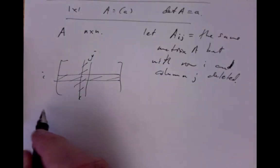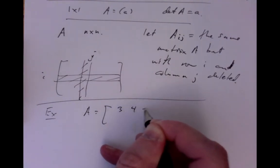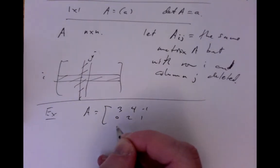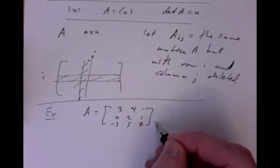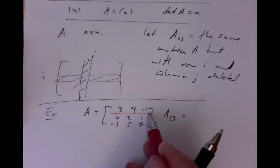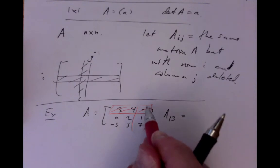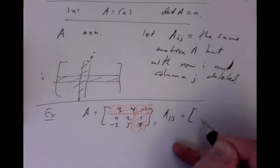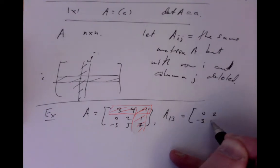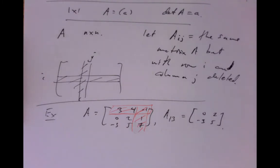In a simple example, if A is the matrix with entries 3, 4, -1 / 0, 2, 1 / -3, 5, 7, then A_{1,3} would be A with row 1 and column 3 deleted. Row 1 is deleted, and column 3 is deleted, leaving us with 0, 2, -3, 5. That's the leftover bits — and this is called a submatrix.